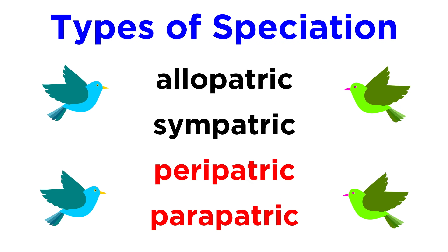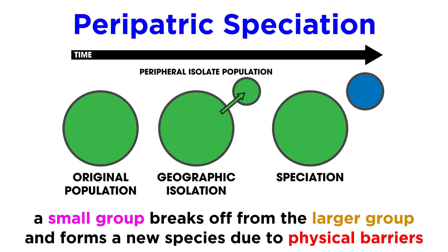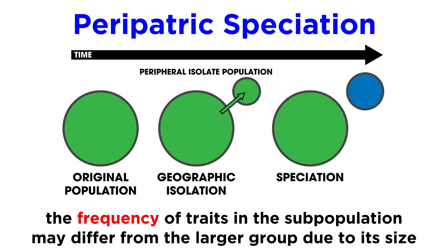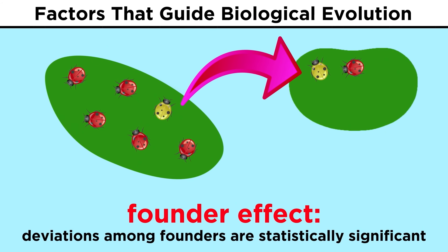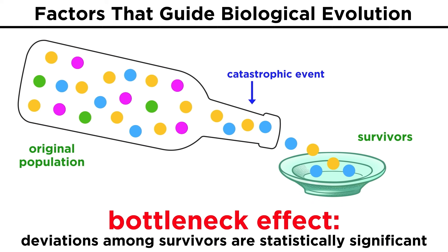The other two definitions are more subtle. Peripatric speciation is when a small group of individuals breaks off from the larger group to form a new species, due to physical barriers. This is just like allopatric speciation, except that one group is much smaller than the other. This is an important distinction because the frequency of specific traits present in this subpopulation may be different from the larger group due to its small size, and this will be reflected in new generations of that group, just as we discussed when we learned about the founder effect and the bottleneck effect in a previous tutorial.